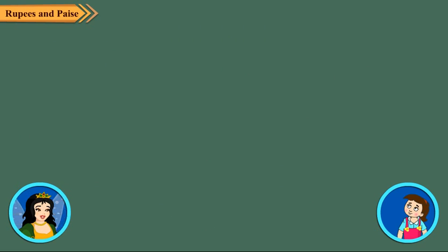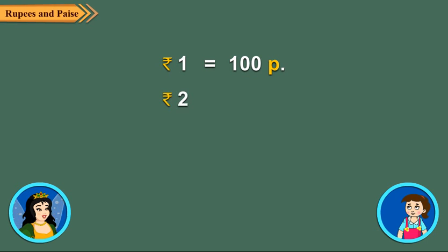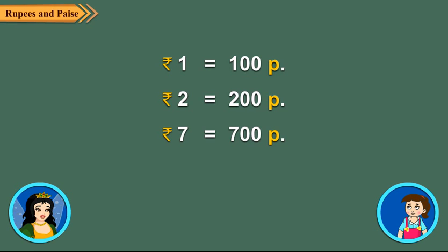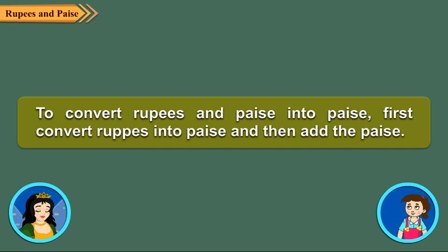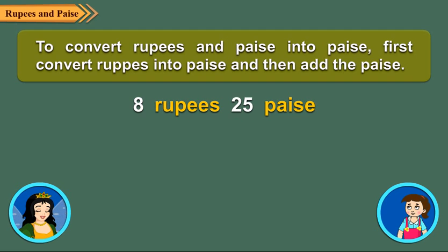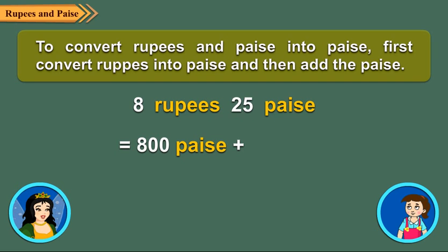Can we convert rupees into paise or paise into rupees? Of course Neha, we can always convert rupees into paise and paise into rupees. There are 100 paise in a rupee. So 2 rupees is equal to 200 paise, and 7 rupees is equal to 700 paise. To convert rupees into paise, simply put 2 zeros on the right. To convert rupees and paise into paise, first convert rupees into paise and then add the paise. For example, to convert 8 rupees 25 paise into paise, we first convert 8 rupees into 800 paise, then add 800 paise to 25 paise.